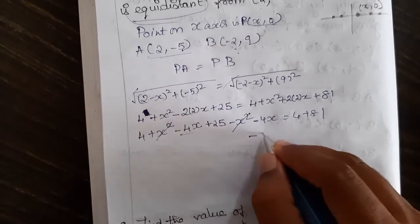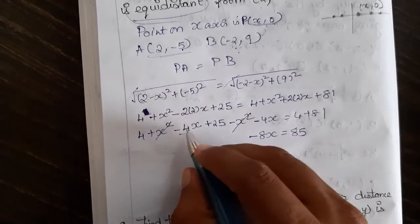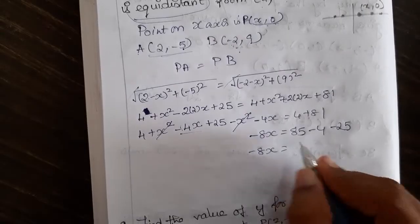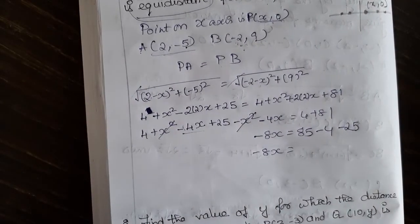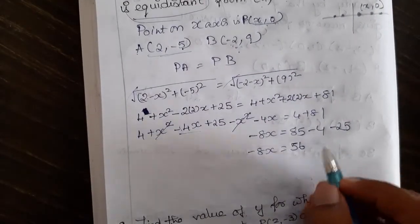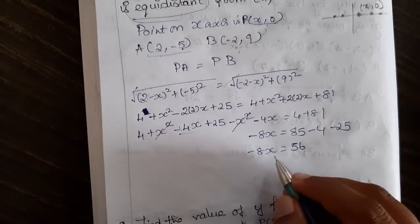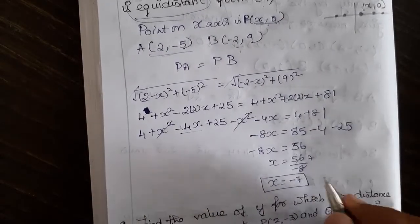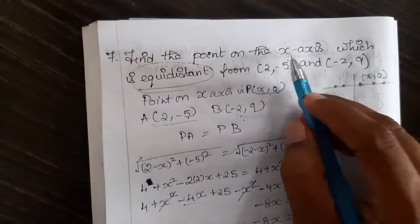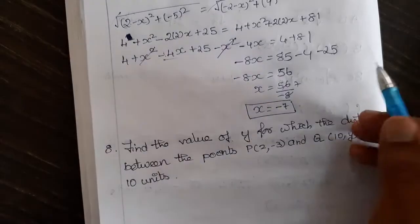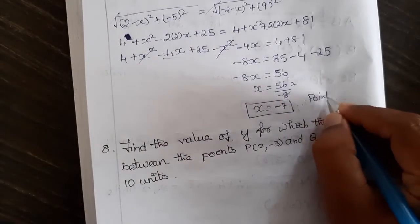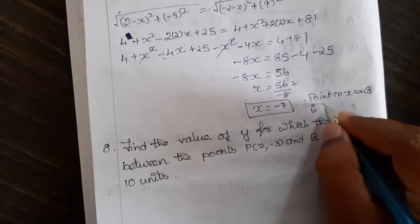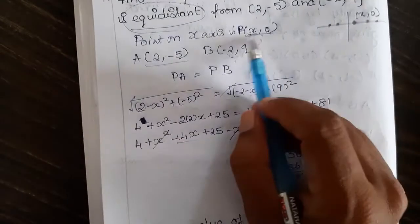So minus 8x equals 4 + 81, bringing over 4 and 25 as minus 4 and minus 25. That gives minus 8x = 85 minus 4 minus 25 = 56. So x = 56 divided by -8 = -7. Therefore, the point on the x-axis is (-7, 0).